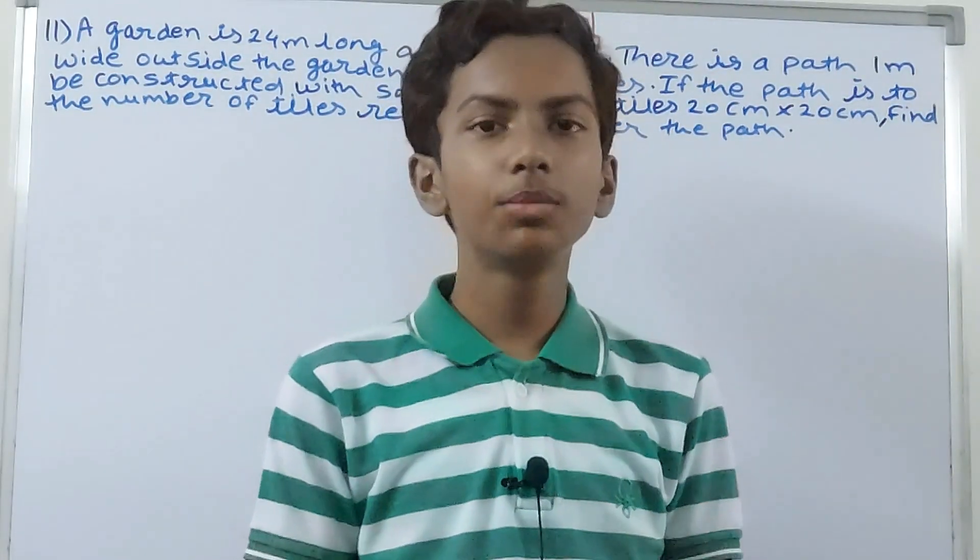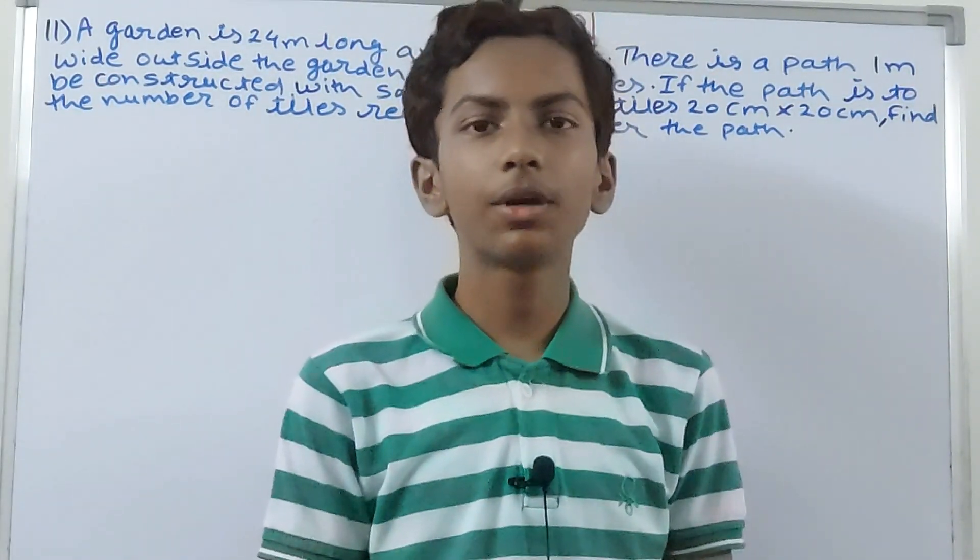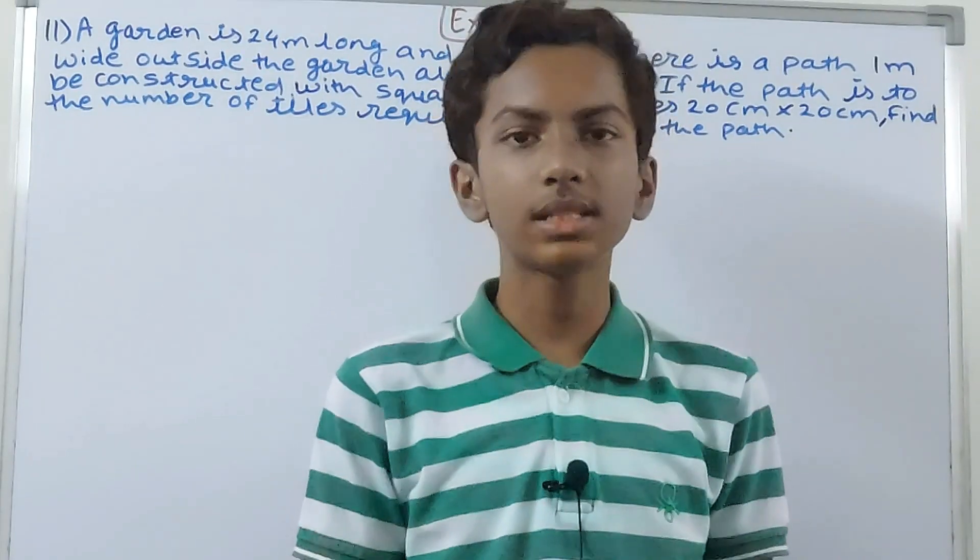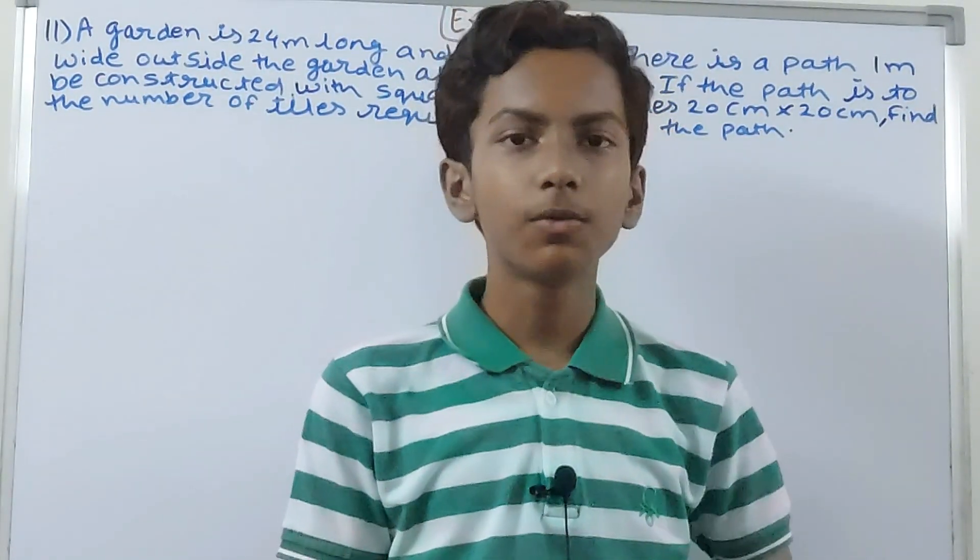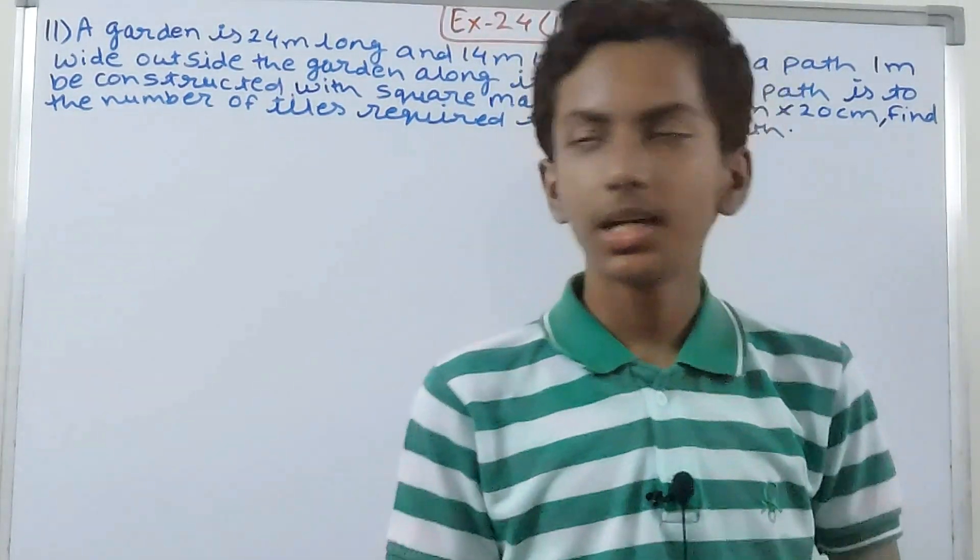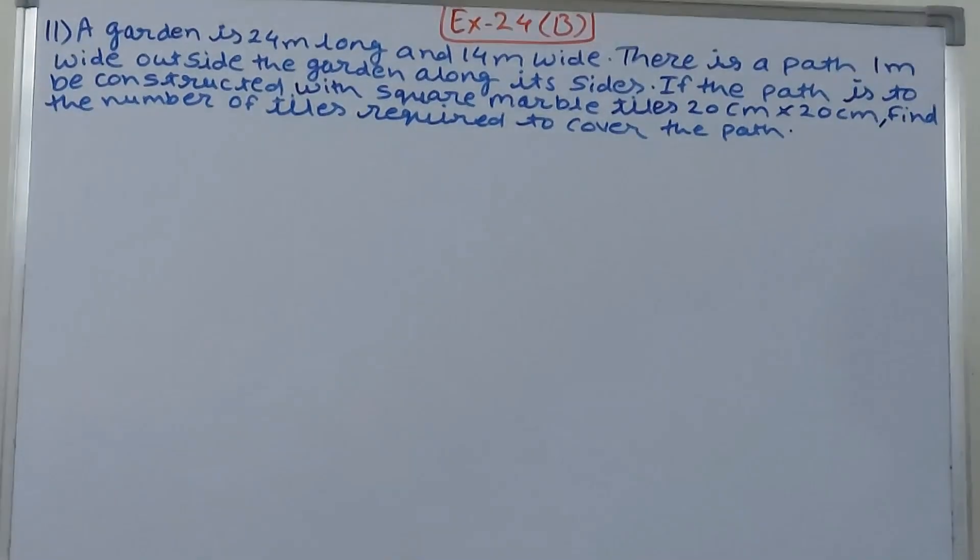Hello friends, welcome back to my YouTube channel Local Learning. In this video we are going to solve ICSE mathematics class 7, chapter 24, area and perimeter, exercise 24B, question number 11. A garden is 24 meters...